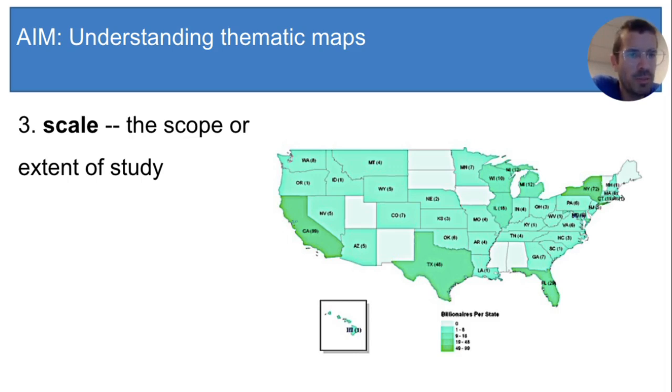Notice again that each state is shaded in with a certain color to show how many billionaires live there. Remember, chloropleth maps are all about shaded predefined areas.